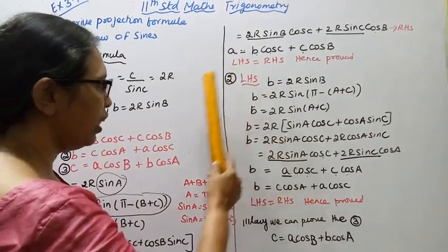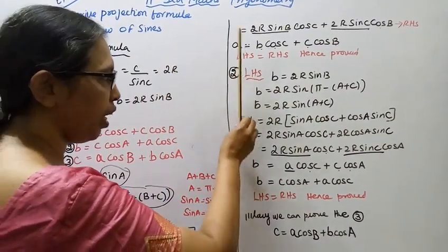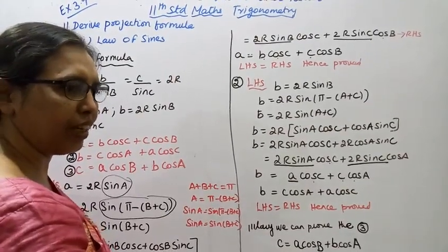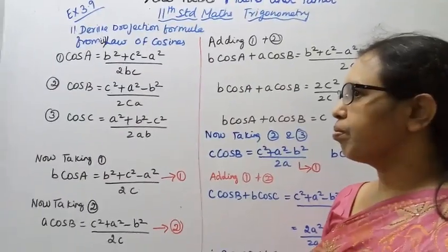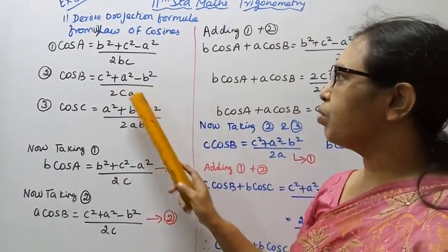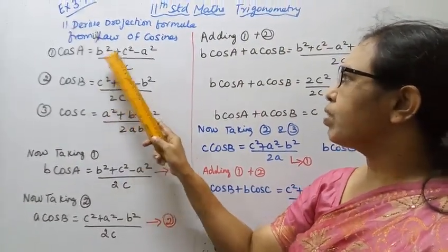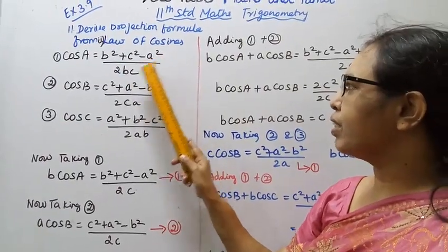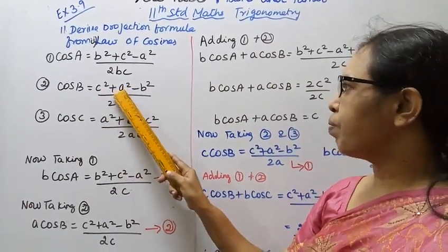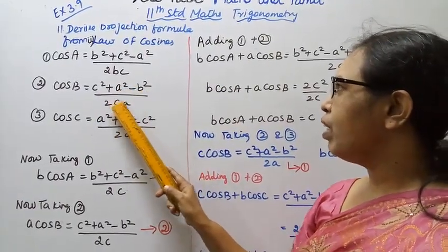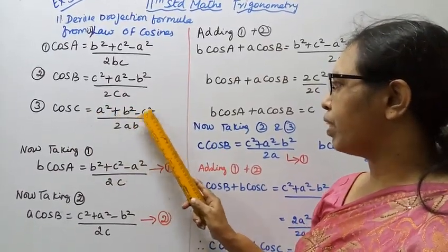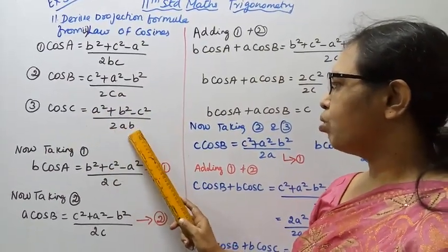Similarly, we can prove the third one: c = a cos B + b cos A, following the same method. Now we will derive the projection formula from the law of cosines. The law of cosines gives: cos A = (b² + c² − a²) / 2bc, cos B = (c² + a² − b²) / 2ca, cos C = (a² + b² − c²) / 2ab.